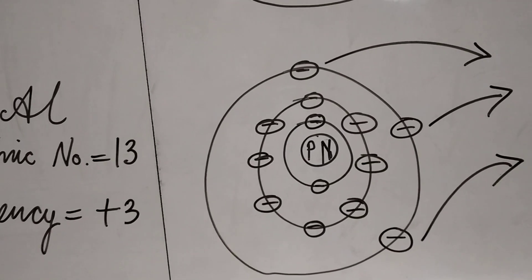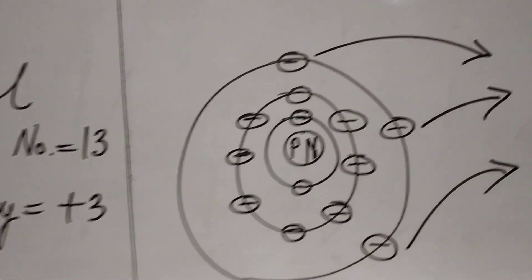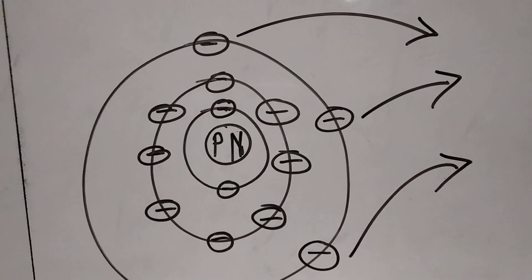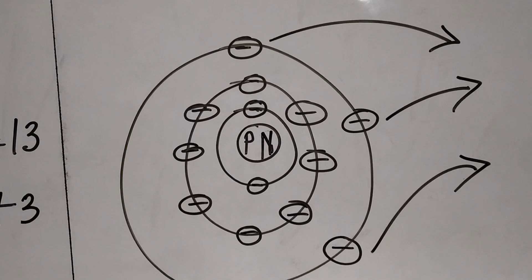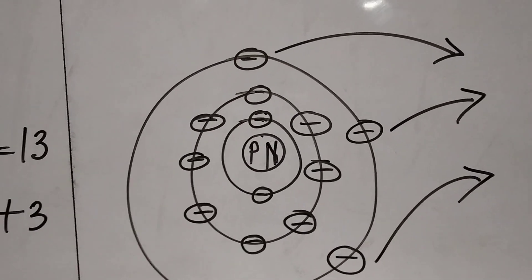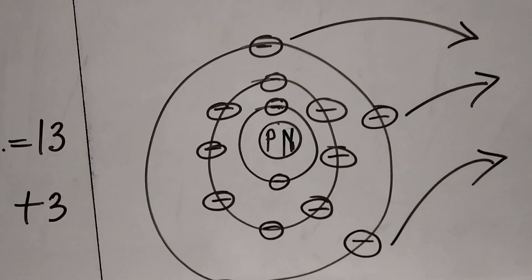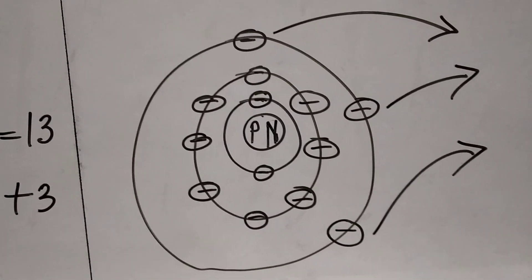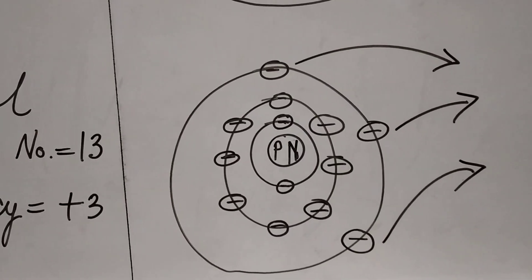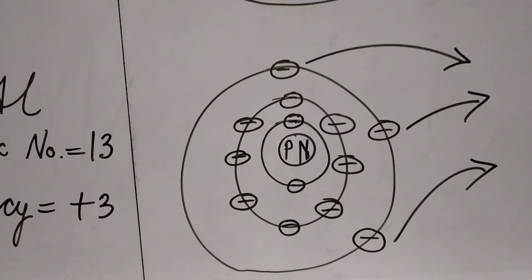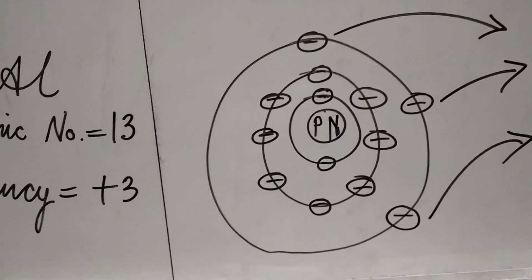Here too, it is easier for aluminium to lose these three electrons in the outermost orbit. Since they are in the outermost orbit, the forces which attract the protons and the electrons, opposite charges, is the weakest. So it is easy for it to lose those three electrons rather than to gain five electrons to complete its octet.